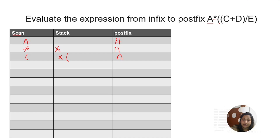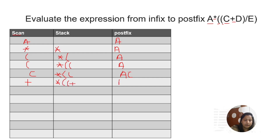Next is plus — an operator, so it goes to the stack. Then D is an alphabet, so it goes directly to postfix giving A, C, D. Now a closing bracket comes. We check: between the opening and closing bracket there is a plus operator inside. So we pop out plus and add it to postfix, and discard both brackets. Now postfix has A, C, D, plus. In the stack we have multiplication and one remaining bracket.